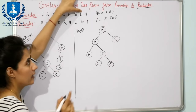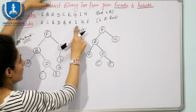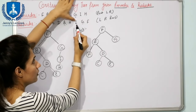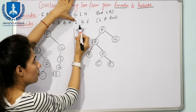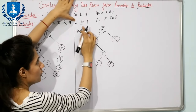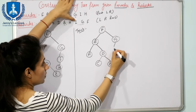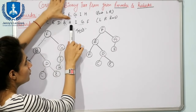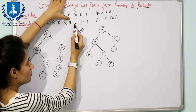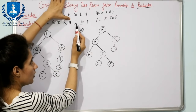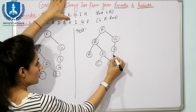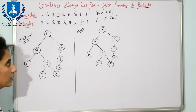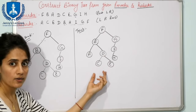Next is I. Find I in post-order. Traversing left to right through elements already in the tree, first element found is G. So I is part of G - write I as left child of G. Next is H. Find H in post-order. Traversing left to right, first element found is I. So H is part of I - write H as left child of I. This completes the binary tree using the trick.